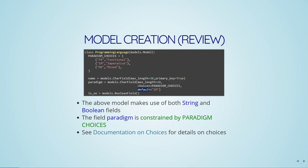I could have done the same thing for the Boolean field — I could have typed default equals True. You can do that with any field. The third field, the Boolean field, is going to check whether or not it's an object-oriented language.